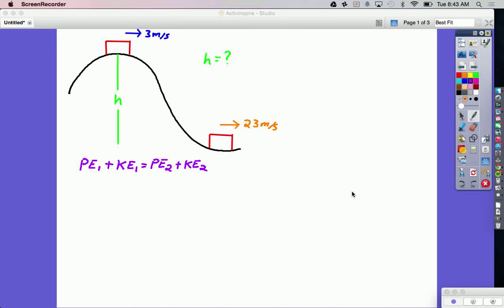A roller coaster is at the top of its first hill going three meters per second, and when it reaches the bottom of that hill it's going 23 meters per second. Our question is how tall is the hill?